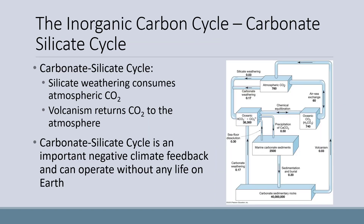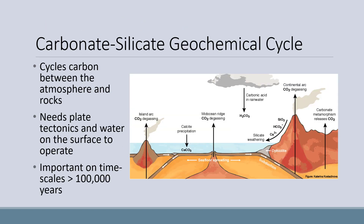Now let's talk about the carbonate silicate cycle, which is the long-term inorganic method of maintaining CO2 balance for the Earth's system. The carbonate silicate cycle consists of silicate weathering and volcanism. Silicate weathering consumes atmospheric CO2, while volcanism returns CO2 to the atmosphere. The carbonate silicate cycle is an important negative climate feedback and can operate without any life on Earth. This negative feedback system absolutely needs plate tectonics and water on the surface to operate, so it wouldn't have been in place during early Earth before the planet had layers sorted by density and liquid water.